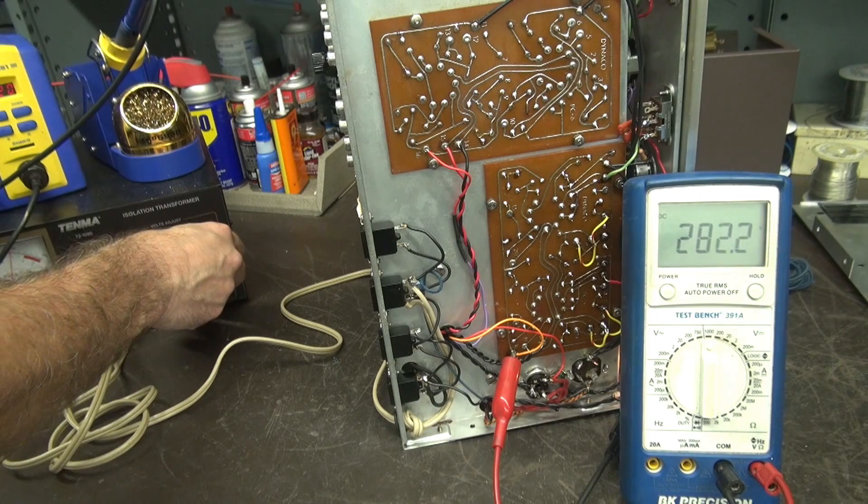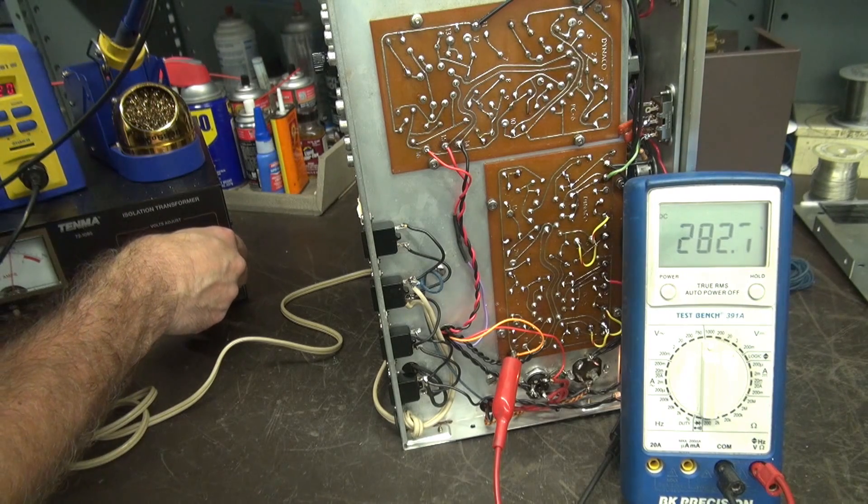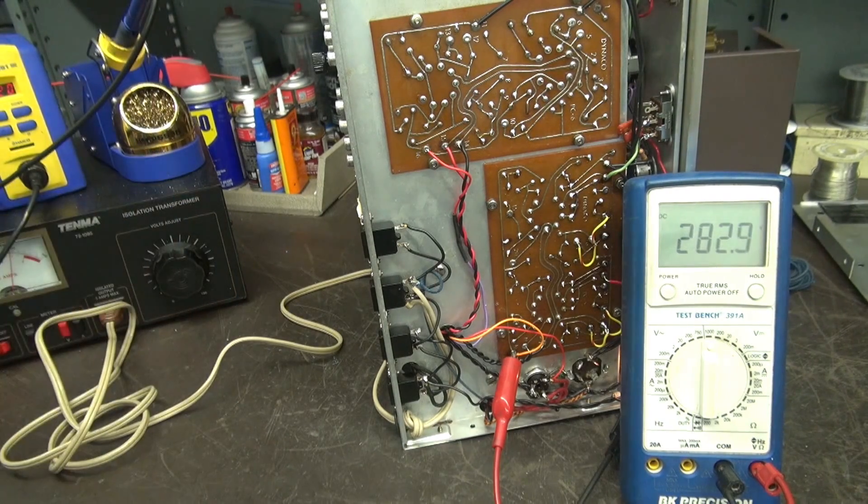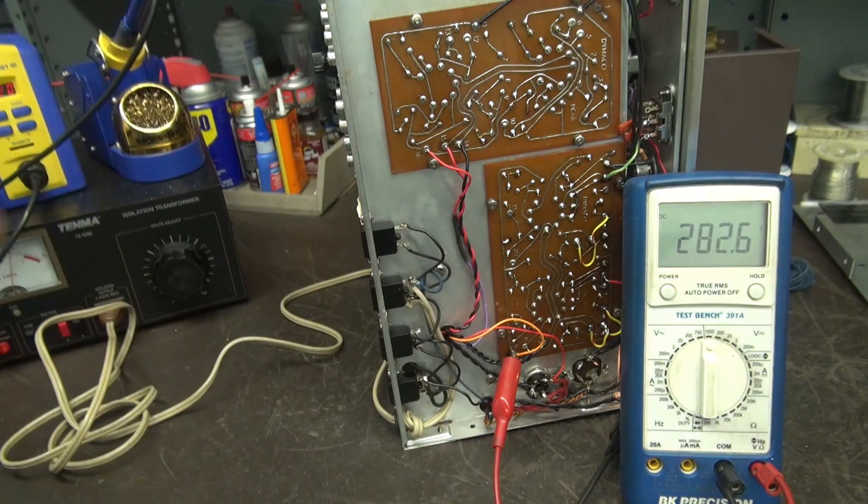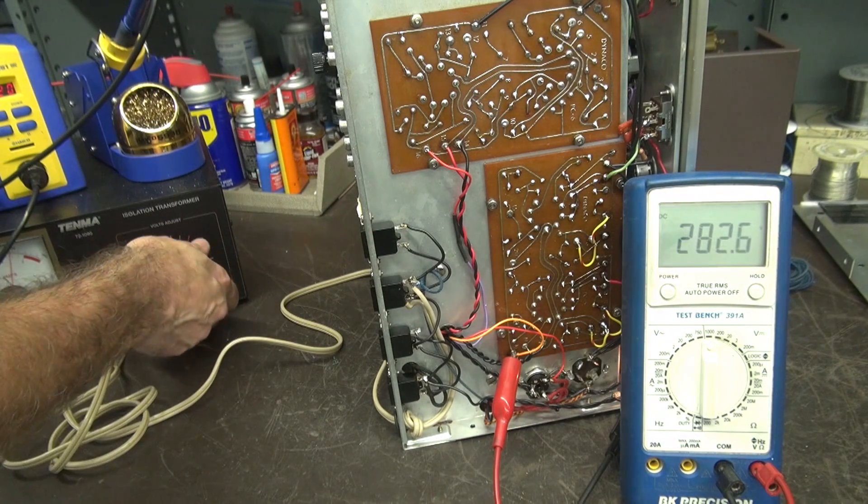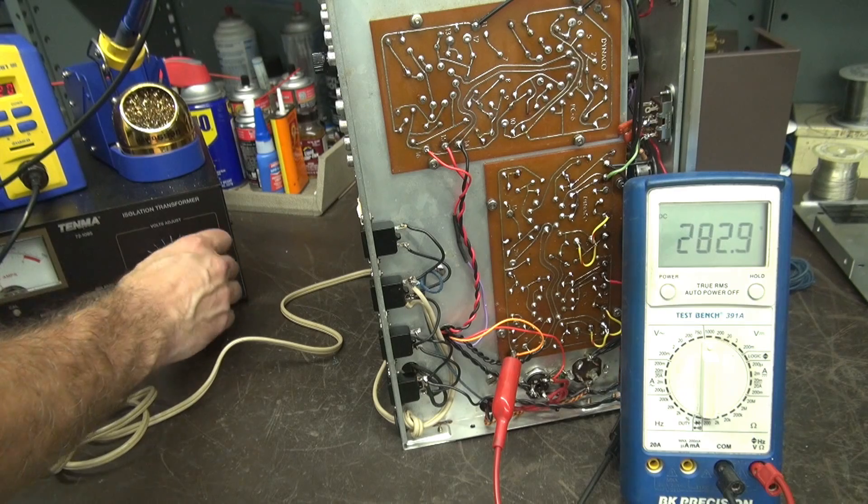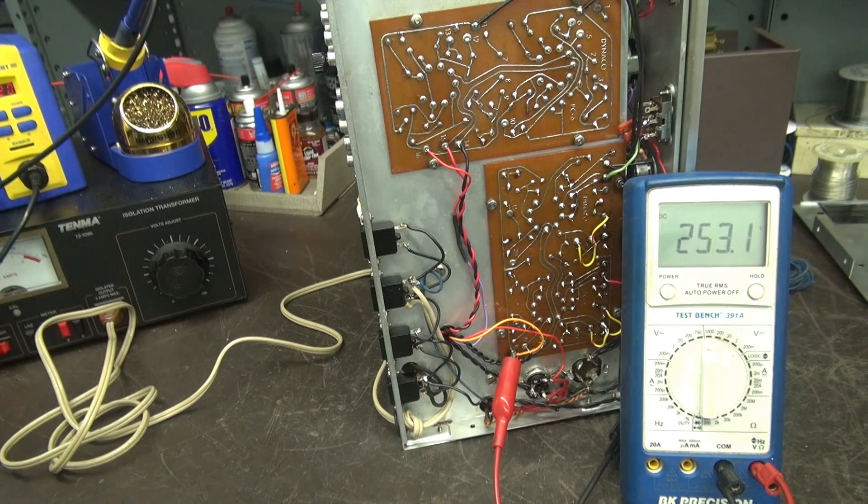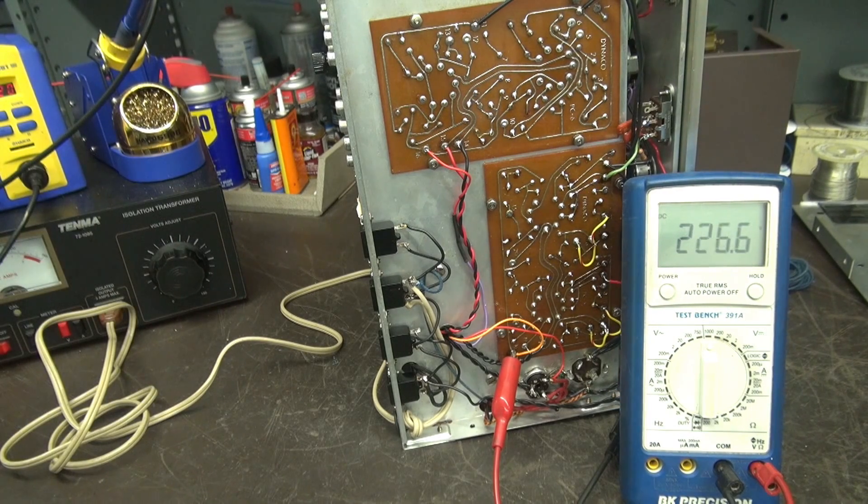So we've got high voltage and obviously we have filament power. Or I would not be seeing any high voltage, right? Because the rectifier wouldn't come on. Good deal. All right. Let's turn it down. Let's hook up a signal to it. See what we get out of it.